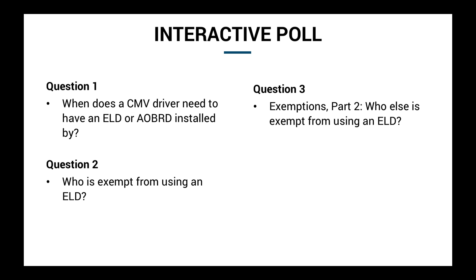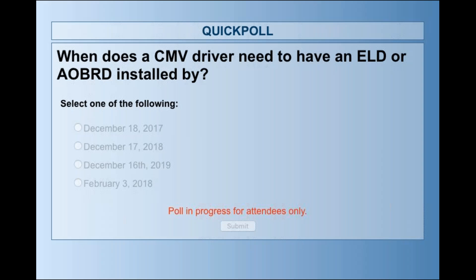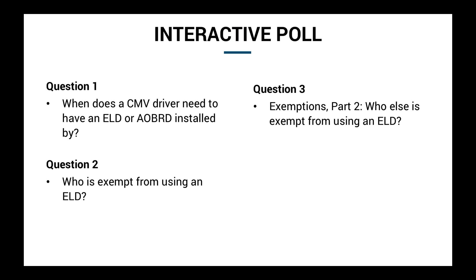The first question is: when does a CMV driver need to have an ELD or AOBRD installed by? Is it December 18, 2017; December 17, 2018; December 16, 2019; or February 3, 2018? The poll is up on the GoToWebinar control panel. The answer is December 18, 2017, and most of you were correct.